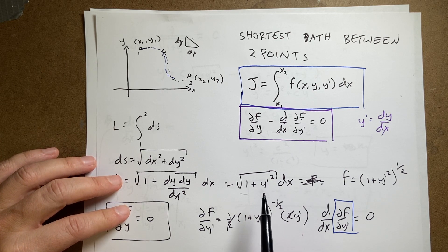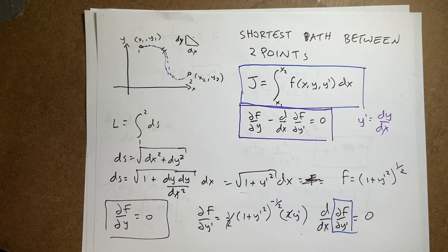And number two is this, getting this y prime squared, this y prime in there, getting rid of the dy, and instead getting a dy prime. That's the other trick, you need a function of x, y, and y prime.